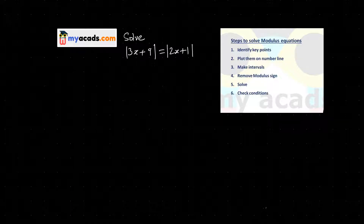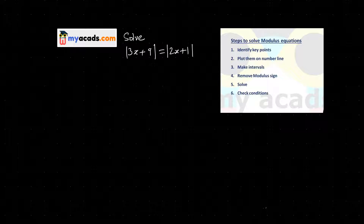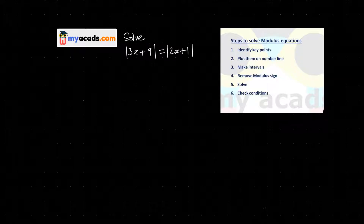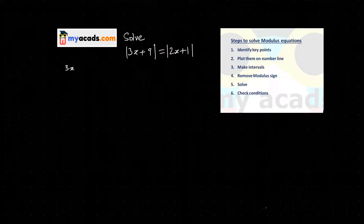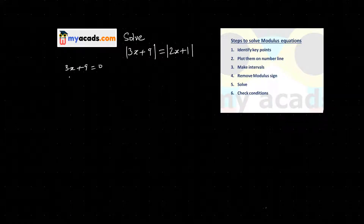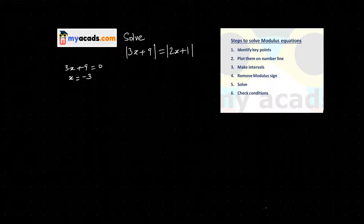What is our first step? Our first step is to identify key points. Our key points are the values at which the function inside the mod equals zero. For example, I will set 3x plus 9 equal to 0, so x equals minus 3. That is one key point.